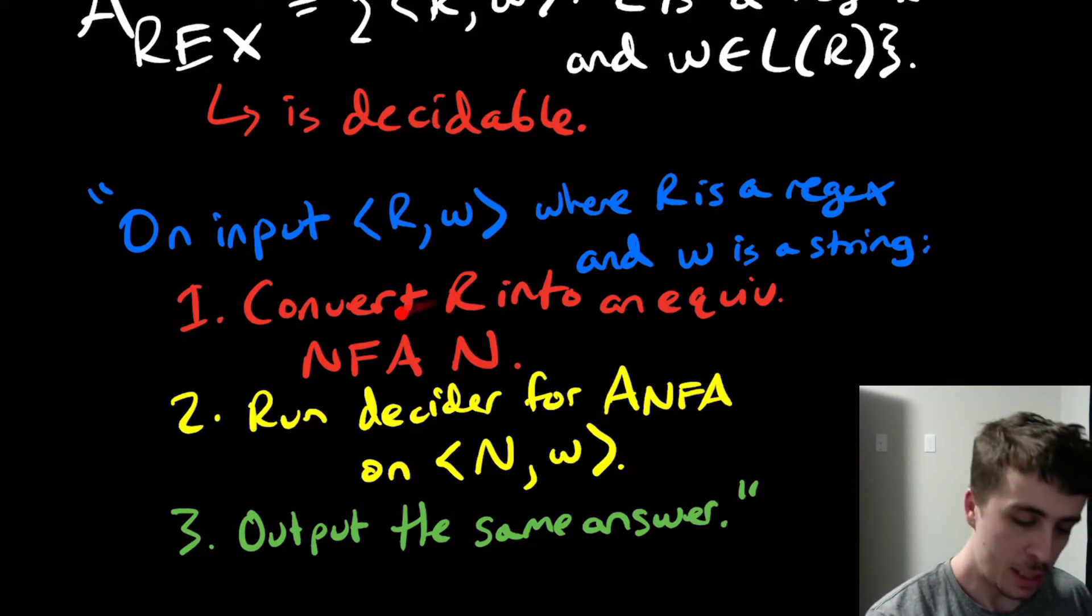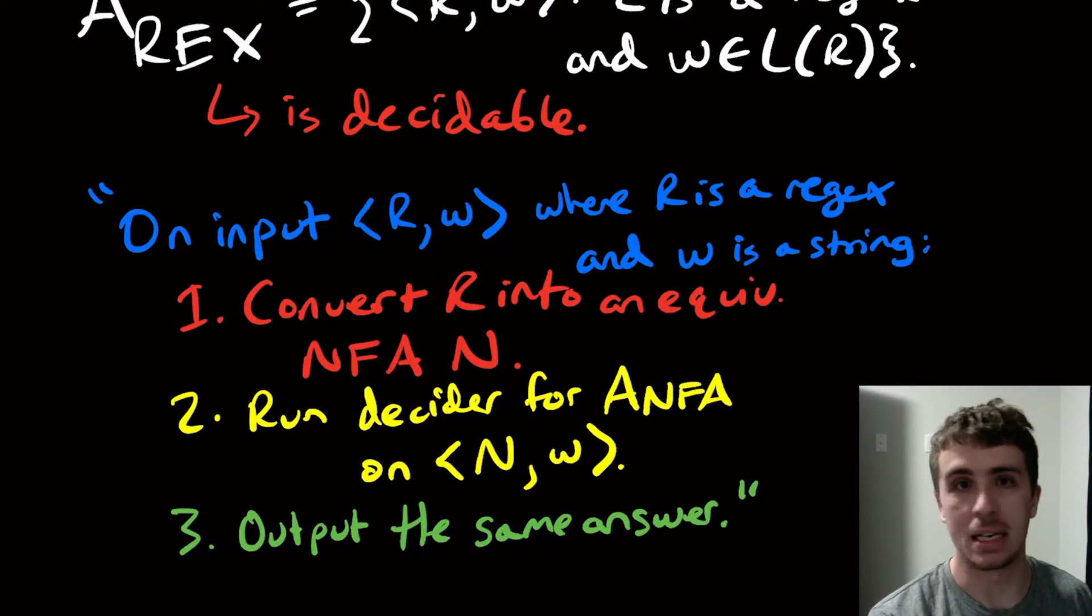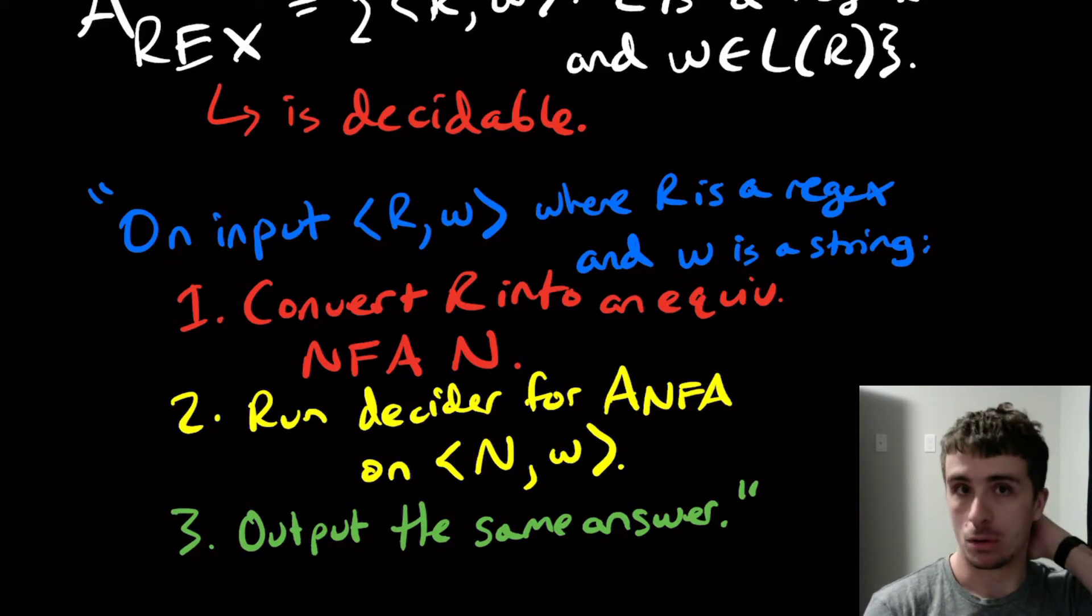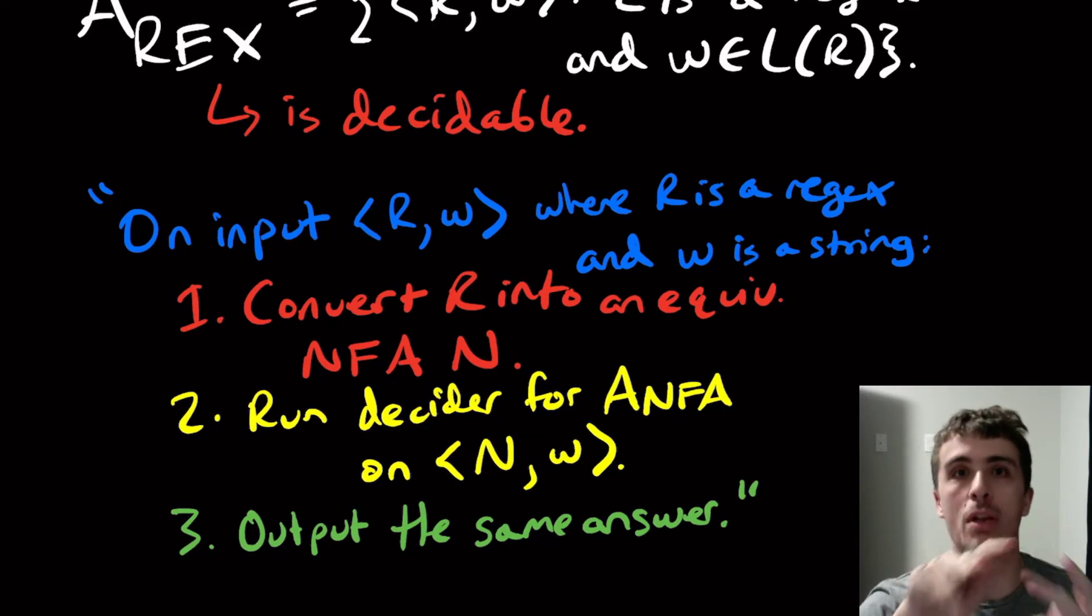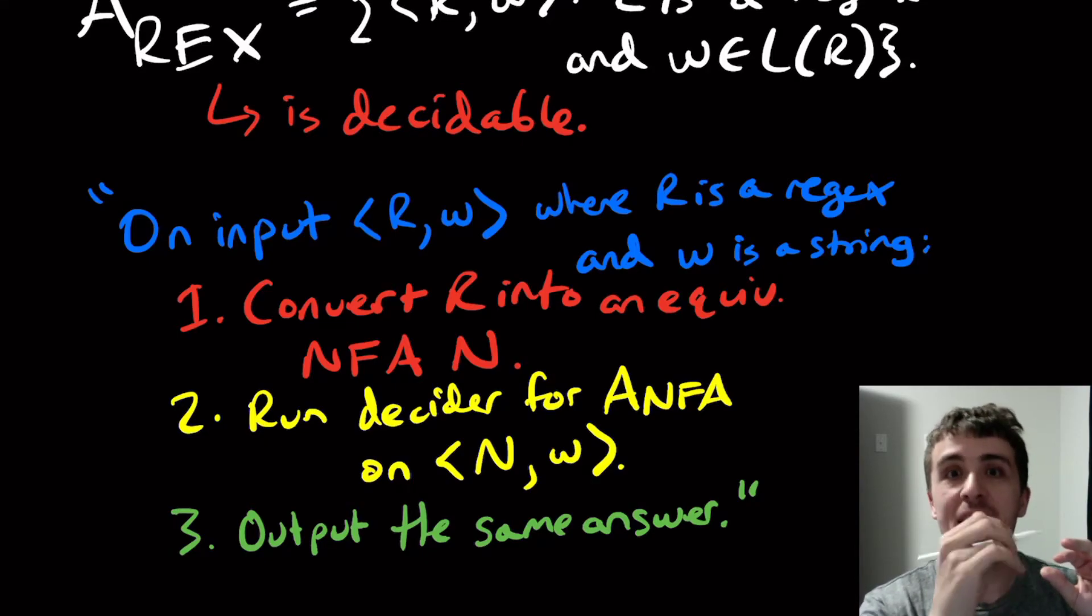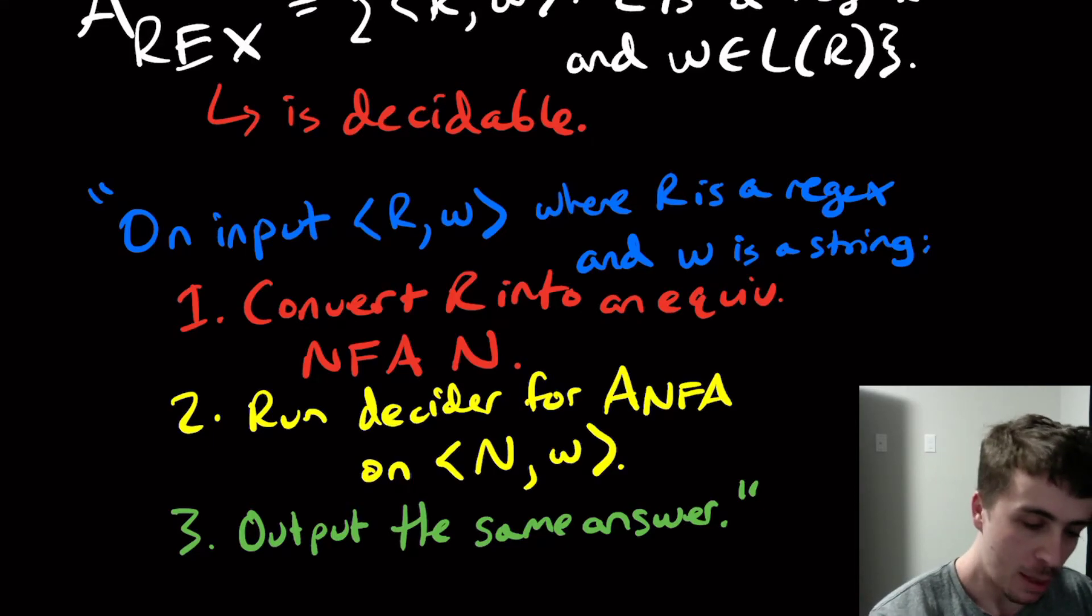So this procedure runs in a finite amount of time because we have an algorithm to convert any regex into an equivalent nfa, which is we looked at the regex and if it was one of those three recursive cases, then we handle the nfa on those recursive cases, or if one of those three base cases, in which case we had a really small nfa to actually make for that small regex.